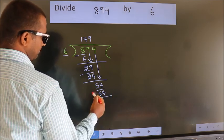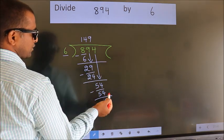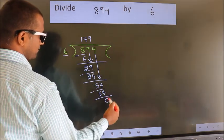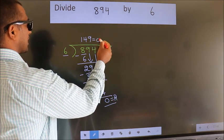Now we subtract. We get 0. No more numbers to bring down. So, we stop here. This is our remainder. This is our quotient.